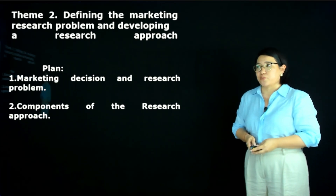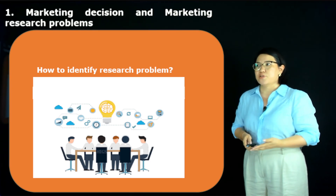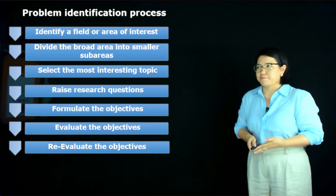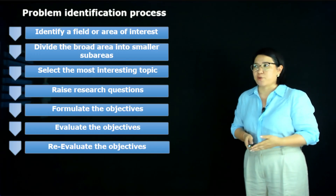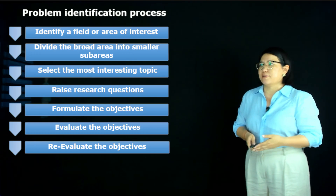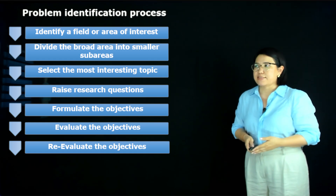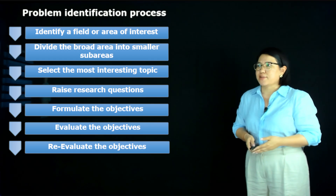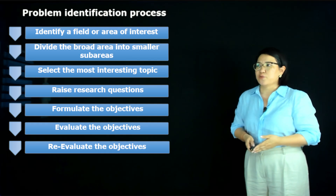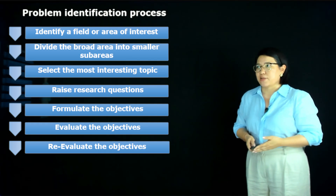We can ask: how do we identify a research problem? The problem identification process includes steps such as: identify a field or area of interest, divide the broad area into smaller sub-areas, select the most interesting topic, raise a research question, formulate the objectives, and evaluate and re-evaluate those objectives.